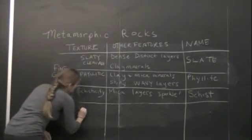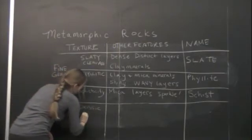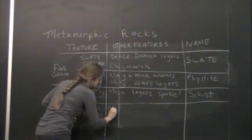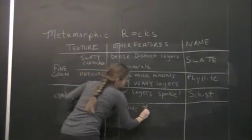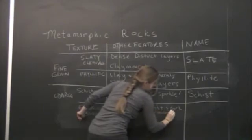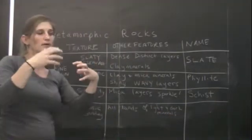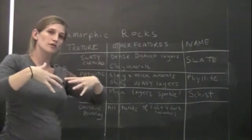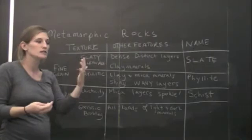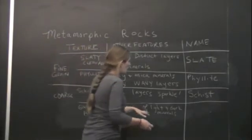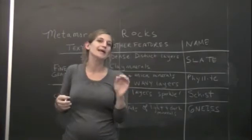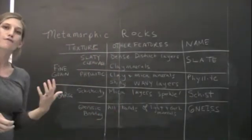The next one that we're going to look at has gneissic banding. And what that means is that we now have alternating bands of light and dark minerals. We often call this zebra striping. So what happens is that we've undergone so much metamorphism that the dark minerals and the light minerals start to segregate into bands. So we start to see a striped rock. It's black and white or dark and white in that color. And then the rock that we're going to see is called a gneiss. So we have a very funny spelling. It is pronounced nice. So it sounds like N-I-C-E. So that would be all of the foliated metamorphic rocks.